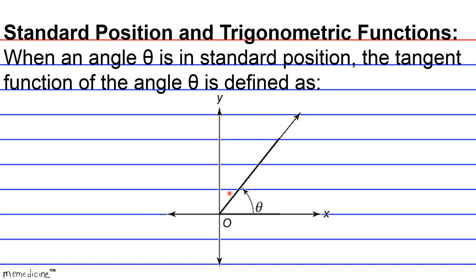An angle theta is in standard position if its vertex is located at the origin of our Cartesian coordinate plane, and the initial side is on the positive x-axis and the terminal side ends in quadrant 1. This angle in standard position is also acute because it's bound between the quadrantal angles 0 degrees and 90 degrees.